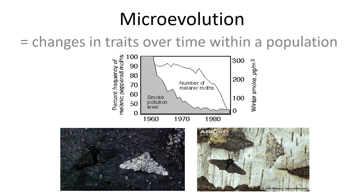Most of evolution we can look at in one of two ways: micro evolution or macro evolution, which we will talk about later. Micro evolution is looking at changes in traits within a population. We can see traits ebb and flow over time. Even those who oppose the idea of evolution generally for religious reasons will often acknowledge that micro evolution is occurring.